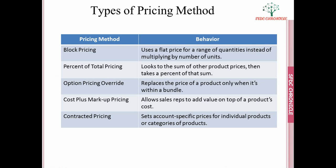For option pricing override: suppose I have a product called memory card. When I sell it as a standalone product I price it at $100, but when I sell it bundled with a phone, the memory card should be $50. We can achieve this via option pricing override. Option pricing override only works with bundle options and will not work with any standalone product.